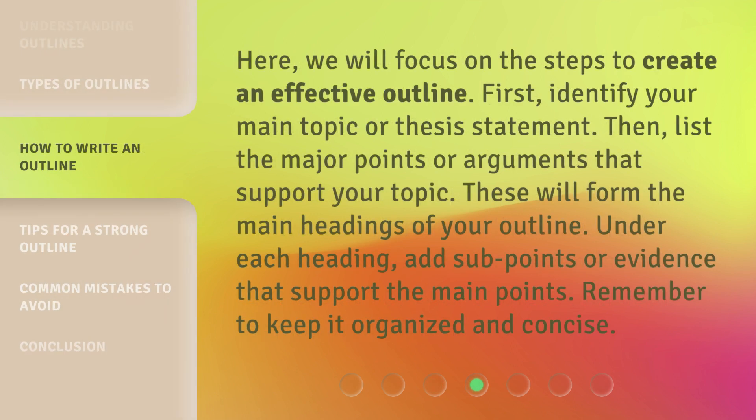Here, we will focus on the steps to create an effective outline. First, identify your main topic or thesis statement. Then, list the major points or arguments that support your topic — these will form the main headings of your outline. Under each heading, add sub-points or evidence that support the main points. Remember to keep it organized and concise.